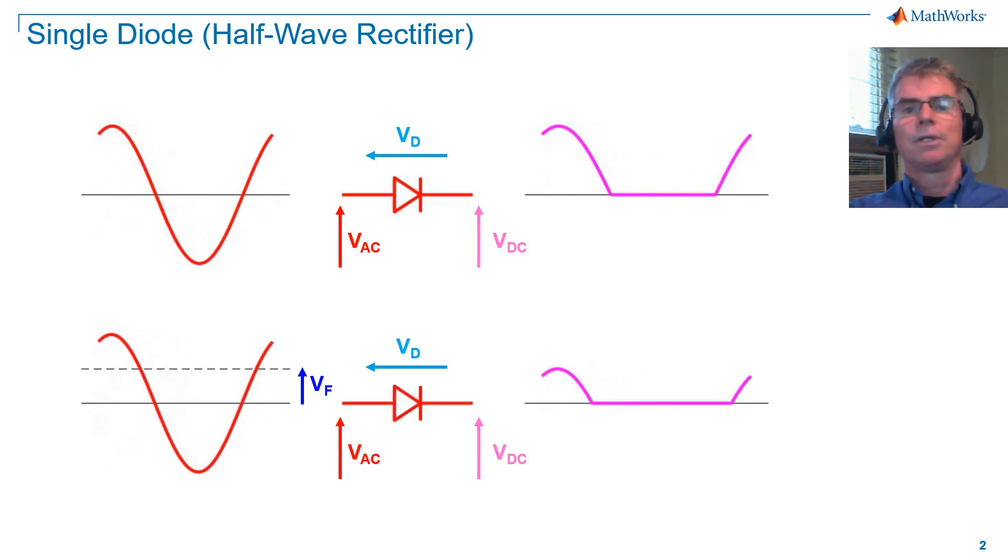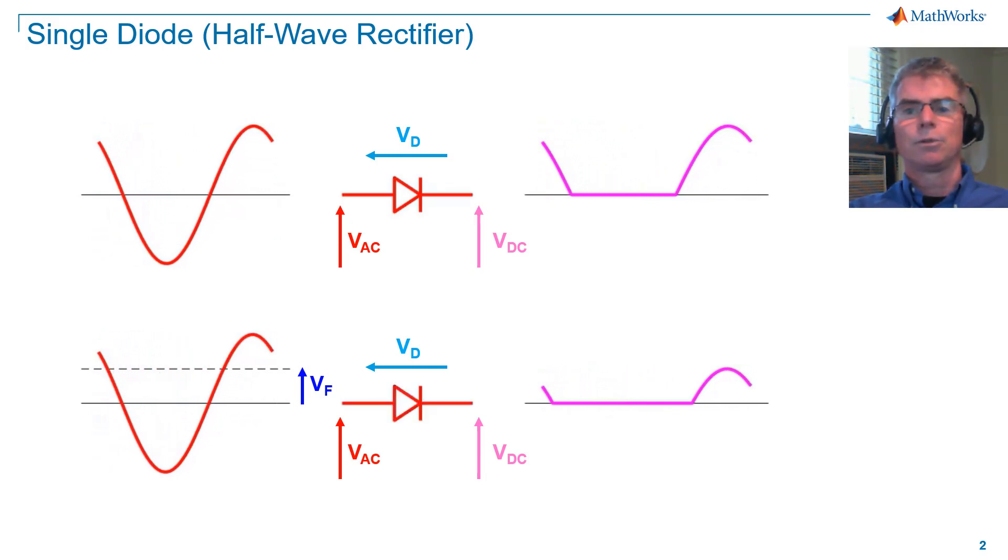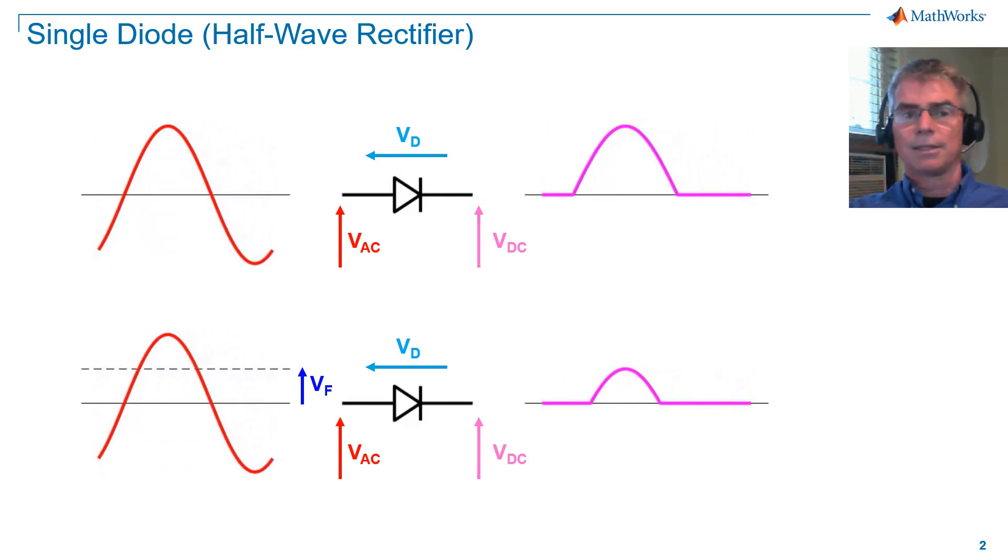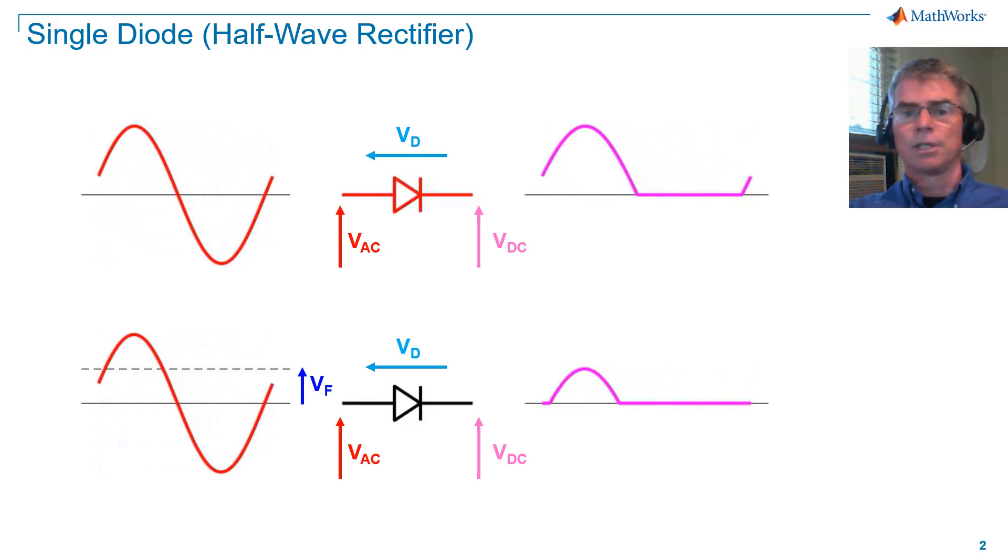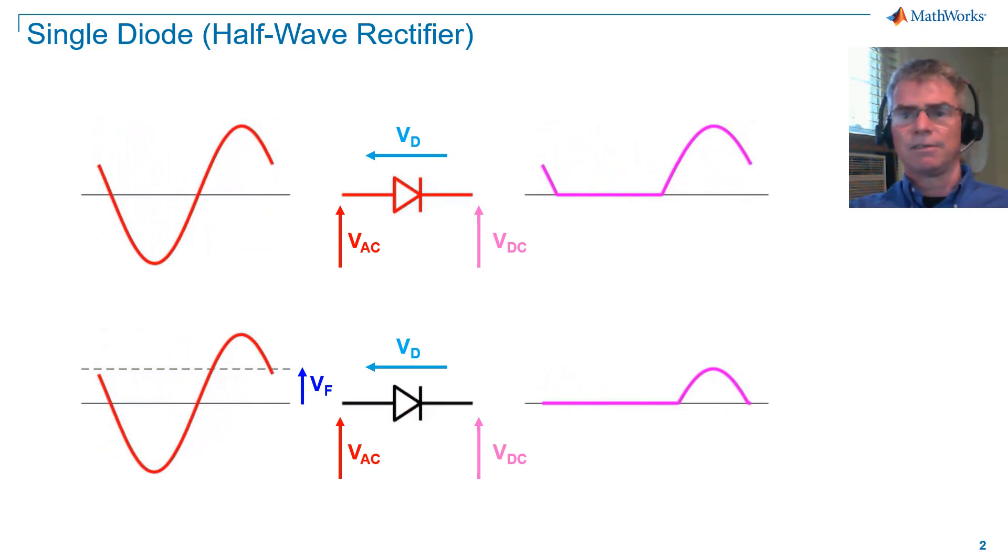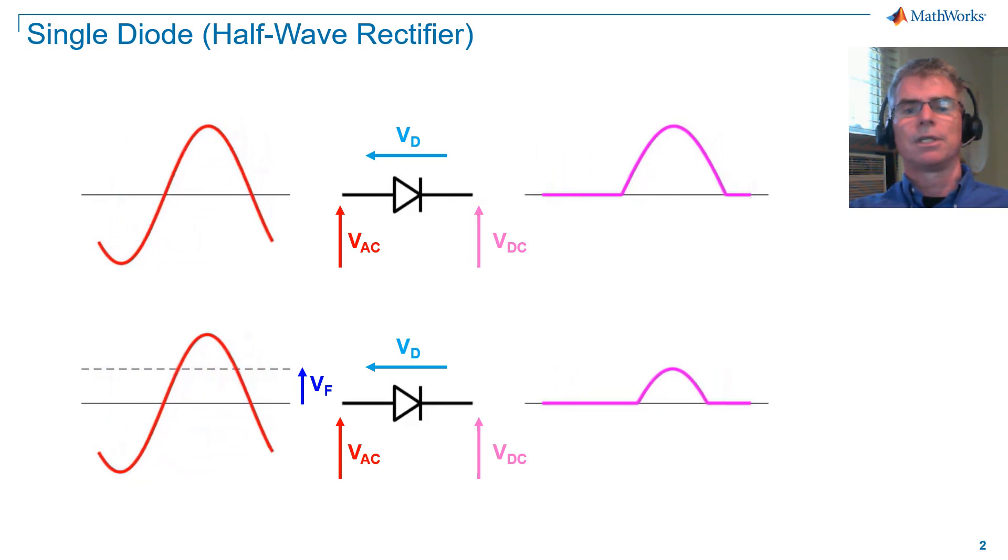Here we have a single diode that connects a single-phase AC source to a resistive load. The diode will conduct when it's forward biased, meaning that the voltage across it is positive. And it will stop conducting when it's negative biased, meaning the voltage across it is negative.